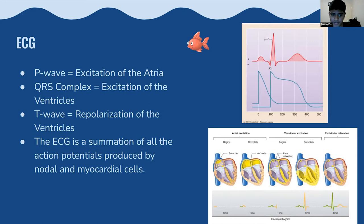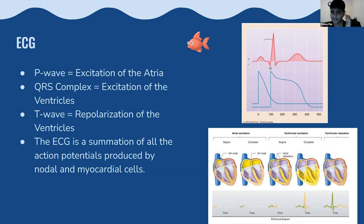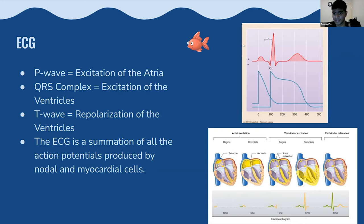The ECG represents the summation of action potentials of both nodal cells and cardiomyocytes — the line you see is a sum of all atrial and ventricular potentials. You can see a typical ventricular potential underneath the letter Q, which is why you get such a strong QRS complex: the nodal cell values combined with the ventricular potential produce that peak. The ECG represents all parts of the heart at once.